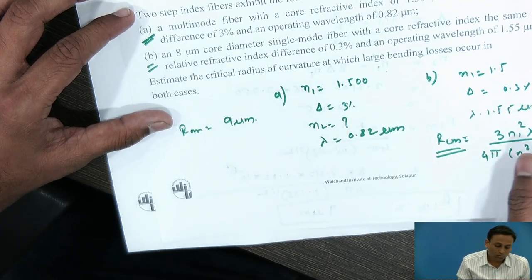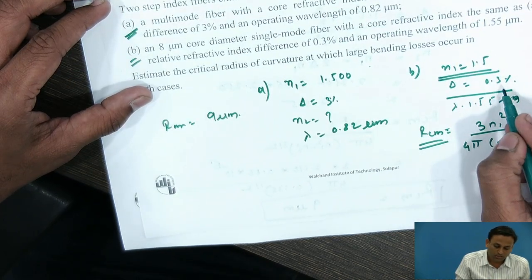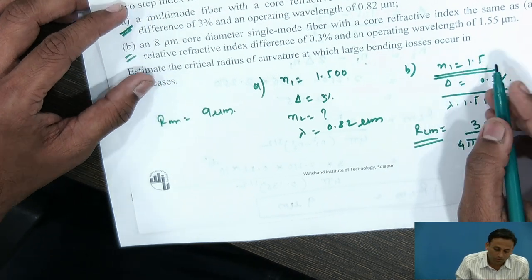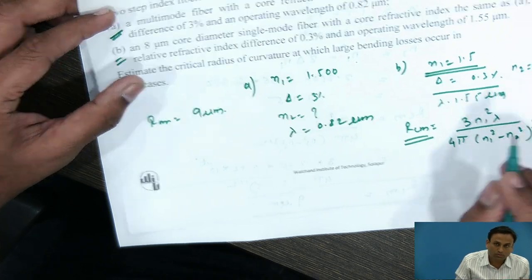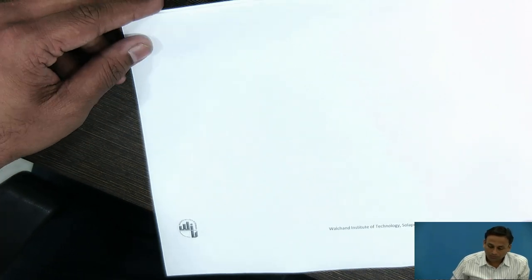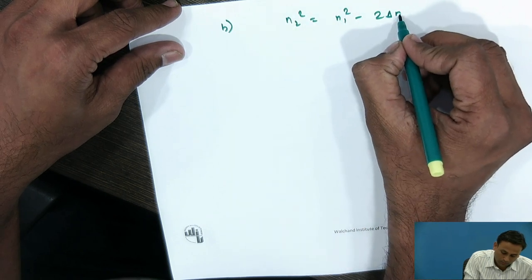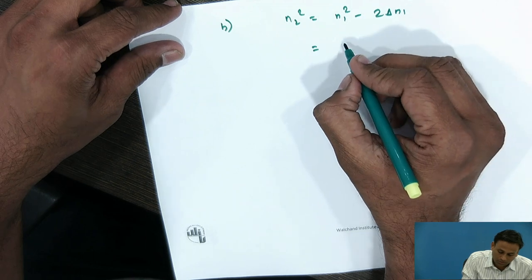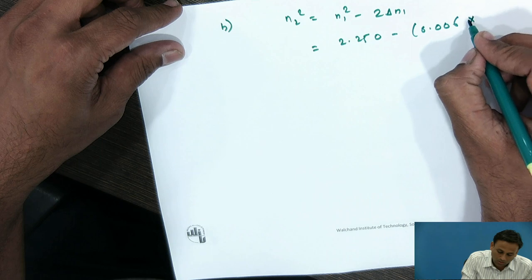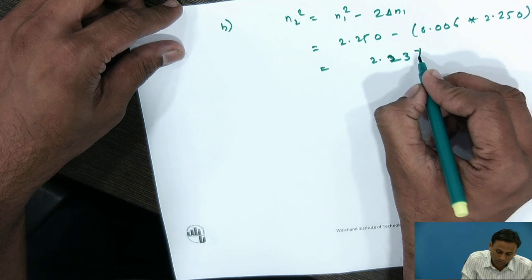For Case B, the single-mode fiber has N1 = 1.5 and Δ = 0.3% = 0.003. In the same manner as before, we calculate N2: N2² = 2.25 − 2×0.003×2.25 = 2.25 − 0.0135 = 2.2365, giving N2 ≈ 1.4955, and N2² ≈ 2.237.